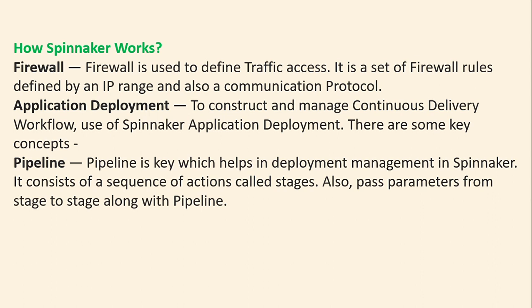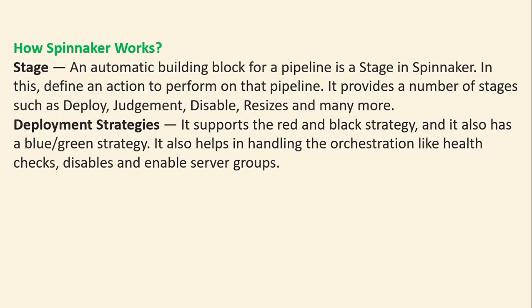Firewall is used to define traffic access — it is a set of rules defined by IP range and communication protocol. For application deployment, Spinnaker uses pipelines as the key concept. A pipeline consists of a sequence of actions called stages, and parameters are passed from stage to stage along the pipeline. Stages are the atomic building blocks of a pipeline — each stage defines an action to perform, such as deploy, judgment, disable, resize, and many more. Spinnaker supports the red/black and blue-green deployment strategies and helps in orchestrating health checks, disabling, and enabling server groups.